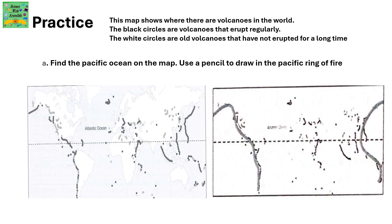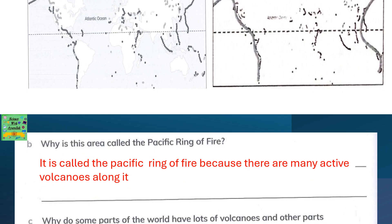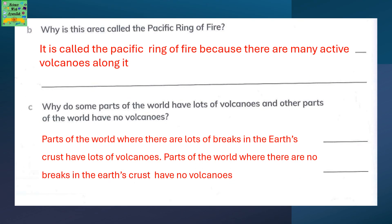Find the Pacific Ocean on the map. Use a pencil to draw in the Pacific Ring of Fire. Why is this area called the Pacific Ring of Fire? It is called the Pacific Ring of Fire because there are many active volcanoes along it.